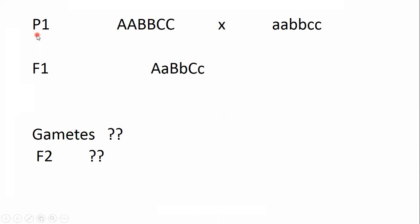Here we have parents represented as P1, and parents must be true breeding or present in homozygous condition. One parent shows the dominant phenotype and is crossed with another parent with recessive phenotype. For three characters we have three gene pairs, represented with dominant capital A, capital B, and capital C letters, while small a, small b, and small c represent the recessive phenotype.